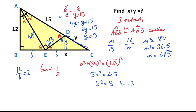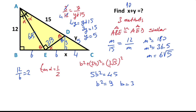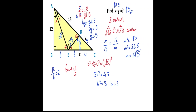Notice that this triangle is a 3-4-5 special right triangle, that means here must be equal 4 units. So x is going to be 10 units. Therefore the sum of x and y equals 15 units. That was the third method.